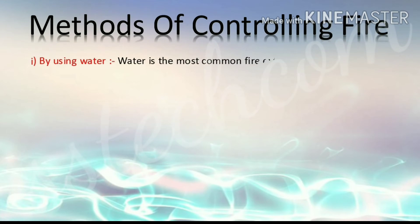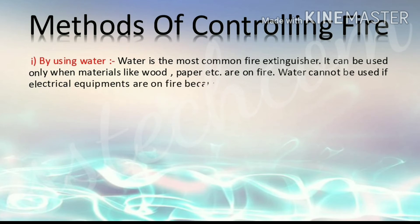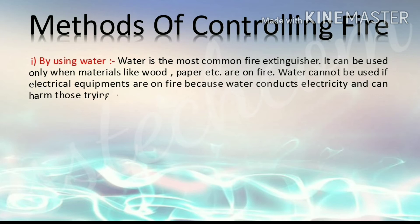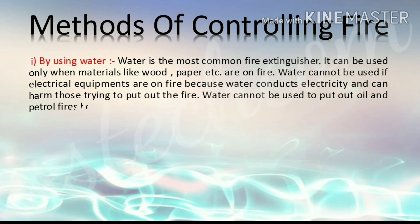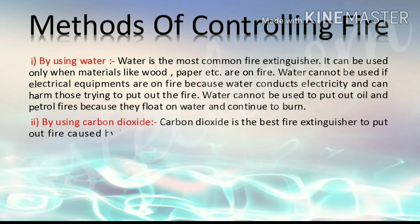Methods of Controlling Fire. First, by using water — water is the most common fire extinguisher. It can be used only when materials like wood, paper, etc. are on fire. Water cannot be used if electrical equipment are on fire because water conducts electricity and can harm those trying to put out the fire. Water cannot be used to put out oil and petrol fires because they float on water and continue to burn.